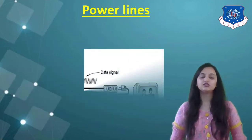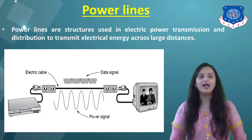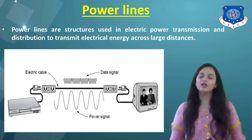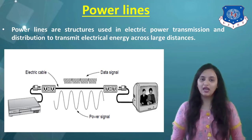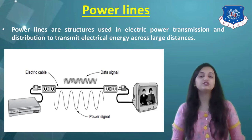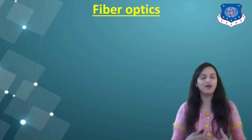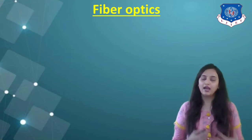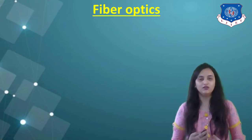The next guided medium is power lines. Power lines are structures used in electric power transmission and distribution to transmit electrical energy across large distances. For example, for TV transmission, power cables are used. In electric cables, a data signal or power signal is carried. Next is fiber optics. Fiber optic cables are widely used nowadays and provide higher speed, better data security, and high assurance of data transmission. Fiber optic cables are similar to coaxial cables except without the braid.